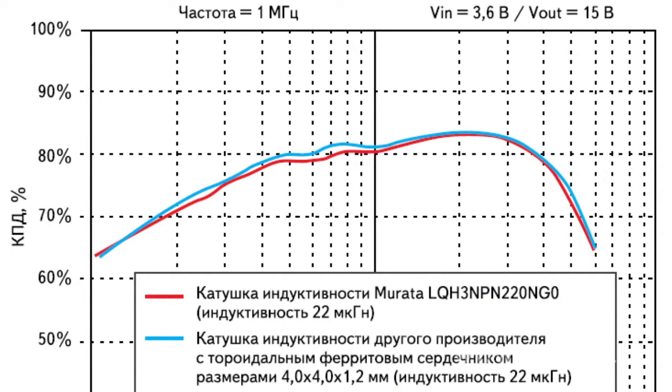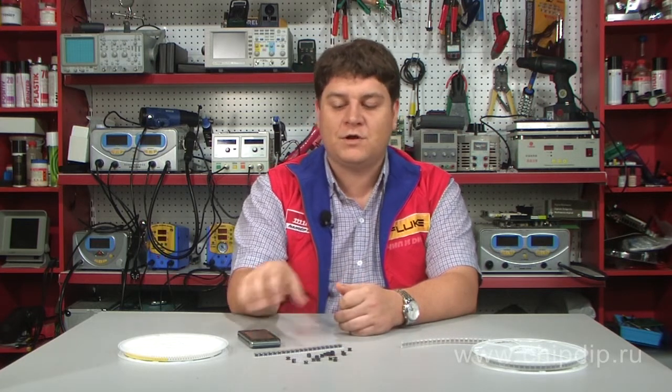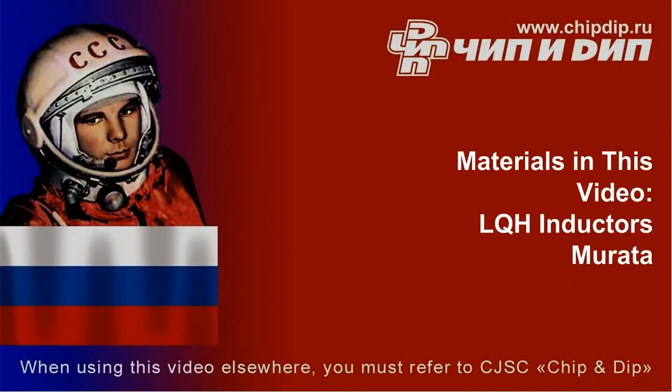The LQH component secures higher conversion efficiency. Accordingly, the use of elements of this series helps to reduce the dimensions and profile of mobile equipment.